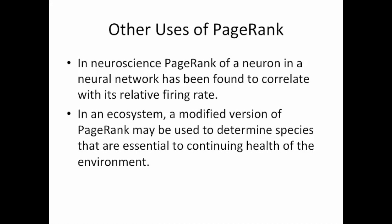Google is not the only use of the PageRank algorithm. In neuroscience, the PageRank of a neuron in a neural network has been found to correlate with its relative firing rate. Also, in an ecosystem, a modified version of PageRank may be used to determine species that are essential to continuing the health of the environment.